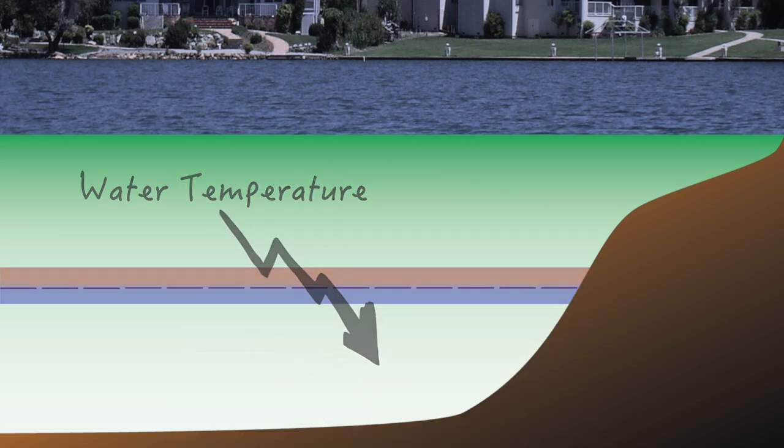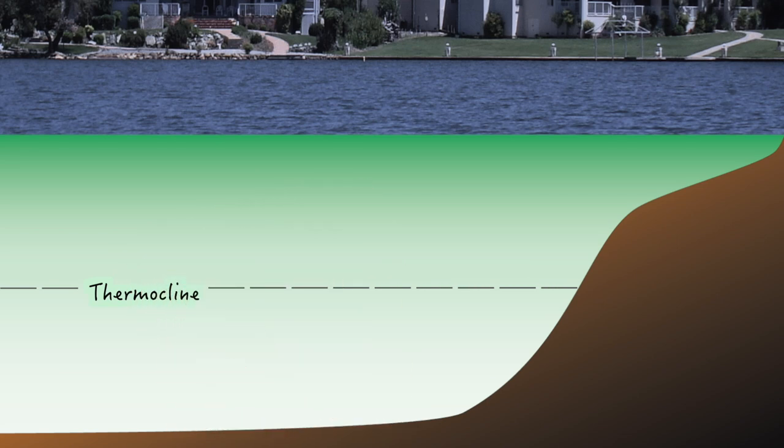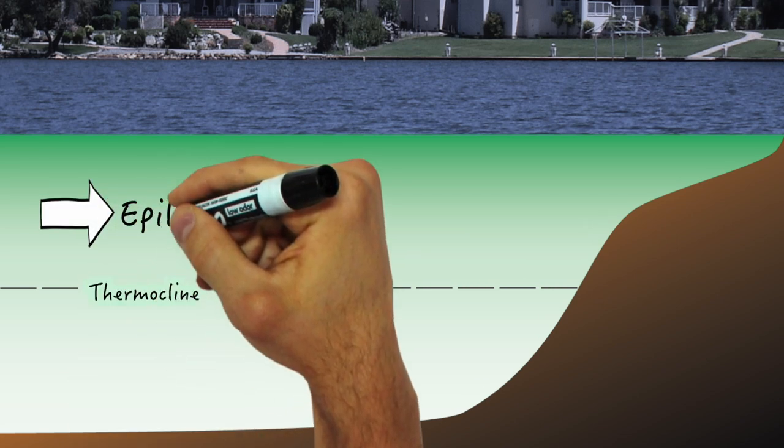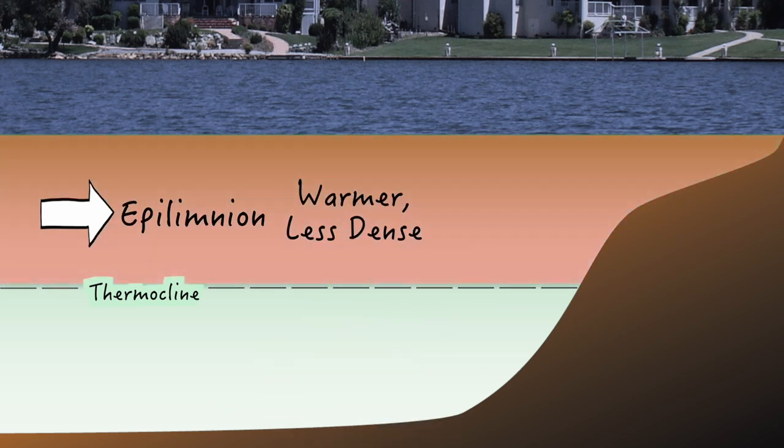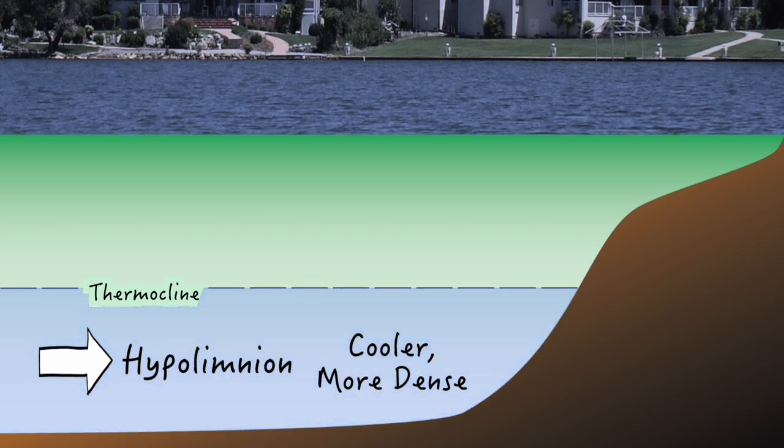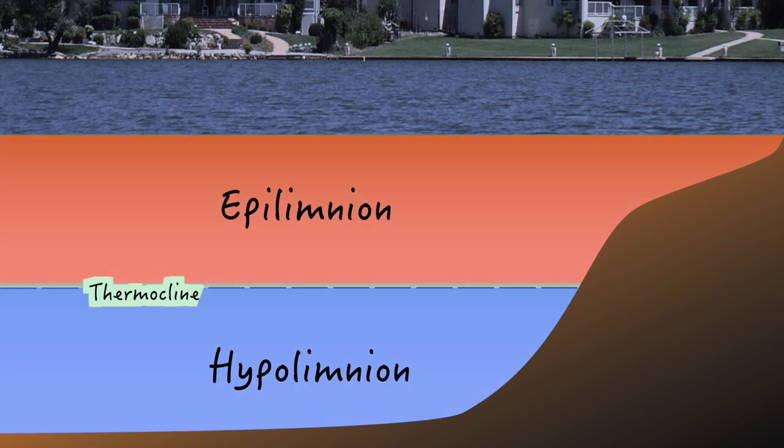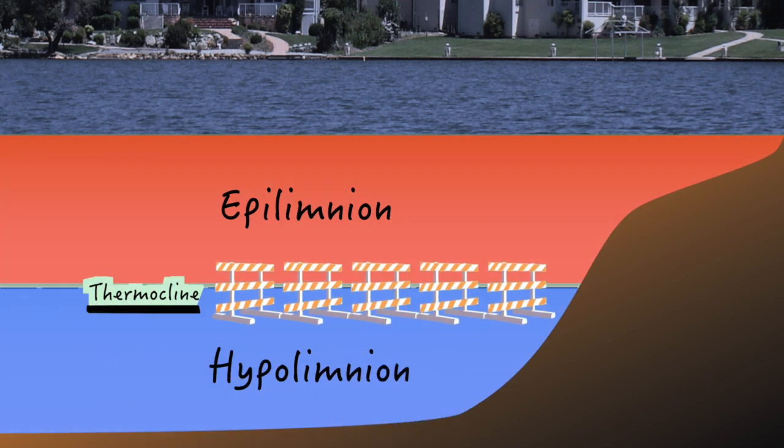The layer where the split takes place is most commonly referred to as the thermocline. The water column above the thermocline is called the epilimnion and is warmer and less dense. The water below the thermocline is called the hypolimnion and is cooler and more dense. This is an important lake characteristic because the thermocline acts as a very significant barrier to mixing between the epilimnion and the hypolimnion.